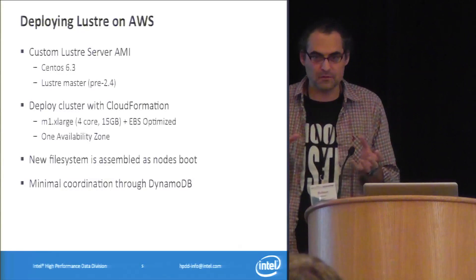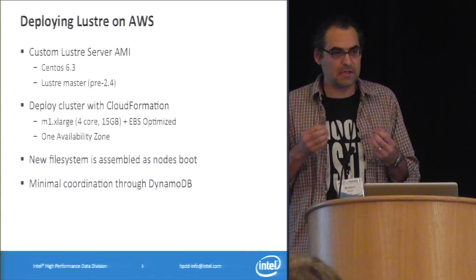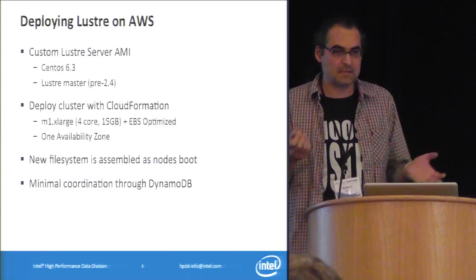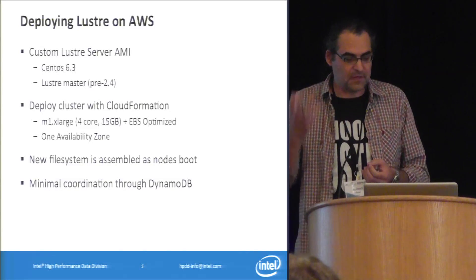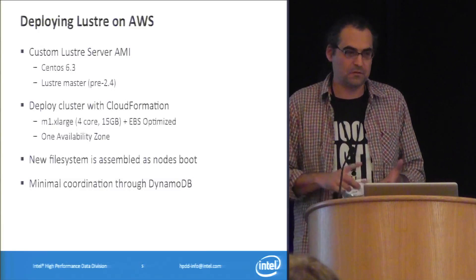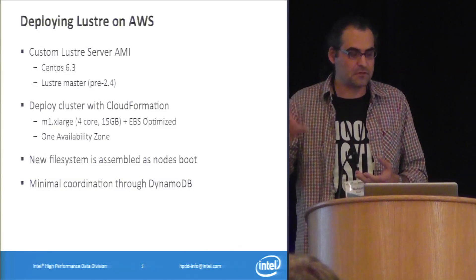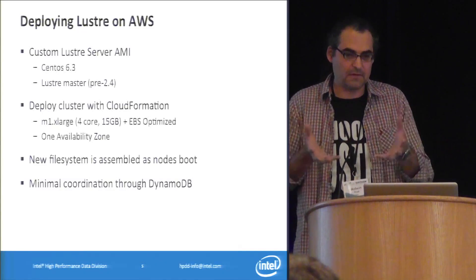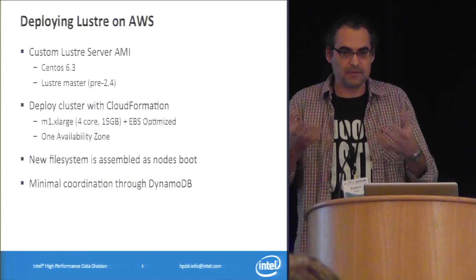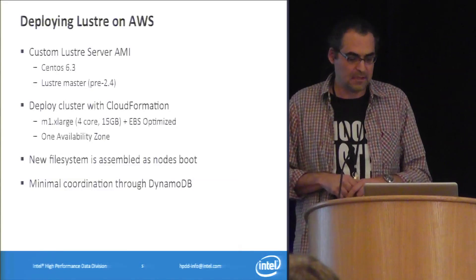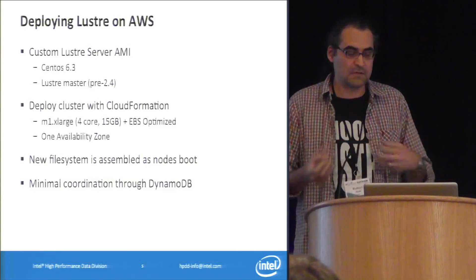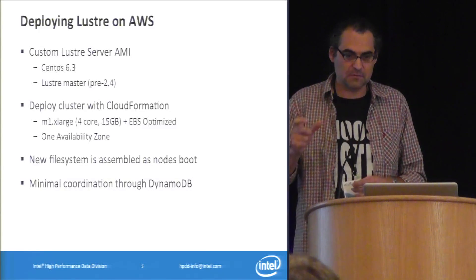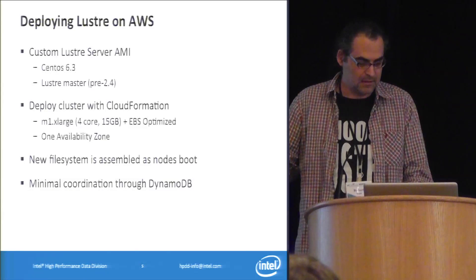The deployment uses an Amazon tool called CloudFormation, which allows you to define a JSON-format template of all the resources you want in a cluster — compute, network, users, firewalls, and anything else. Amazon creates it for you and gives hooks to customize the instances and run scripts. You can combine that with something like Chef or Puppet, but in this case custom scripts were written to deploy Lustre, which will be covered in the next slide.